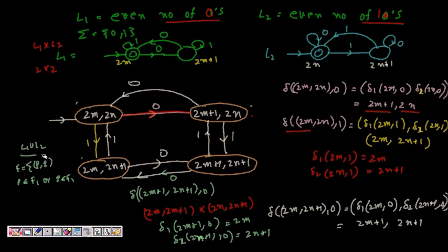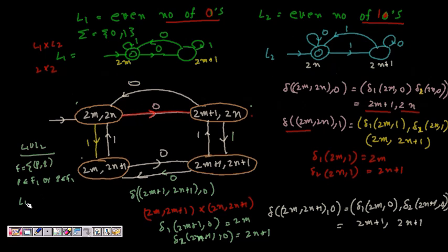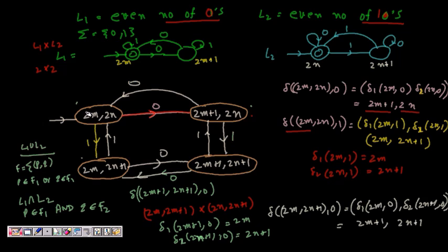For L1 intersection L2: the final states are tuples (p, q) where p belongs to F1 AND q belongs to F2. So only (2m, 2n) is a final state — where both the number of zeros is even and the number of ones is even. This is the intersection.